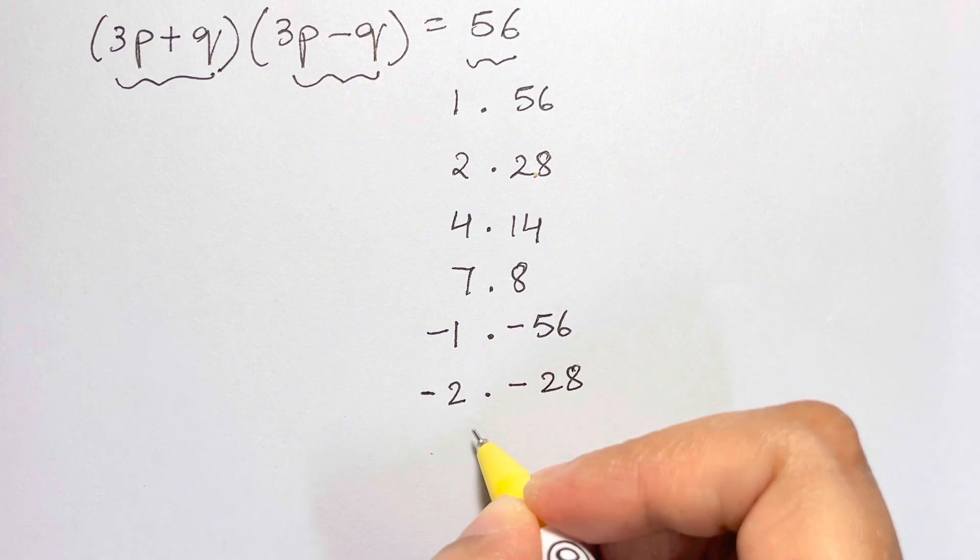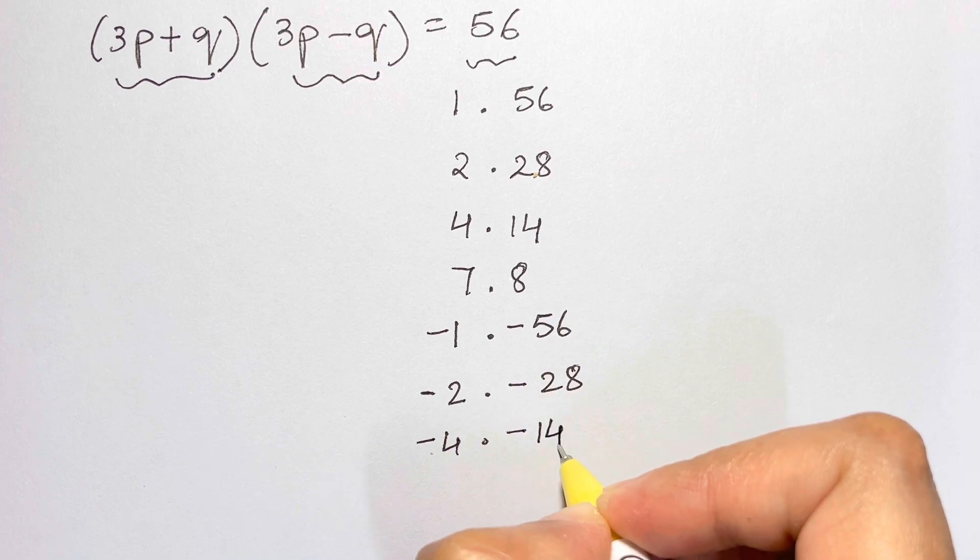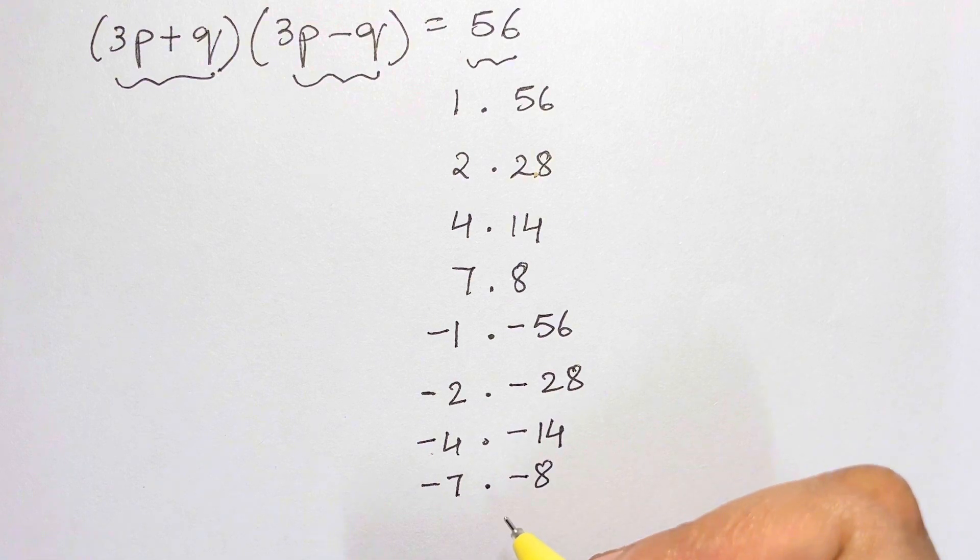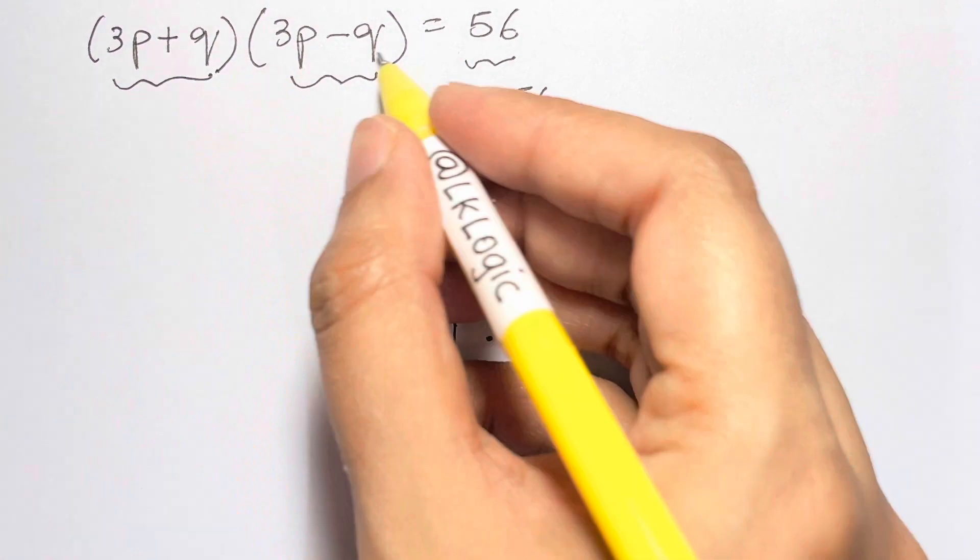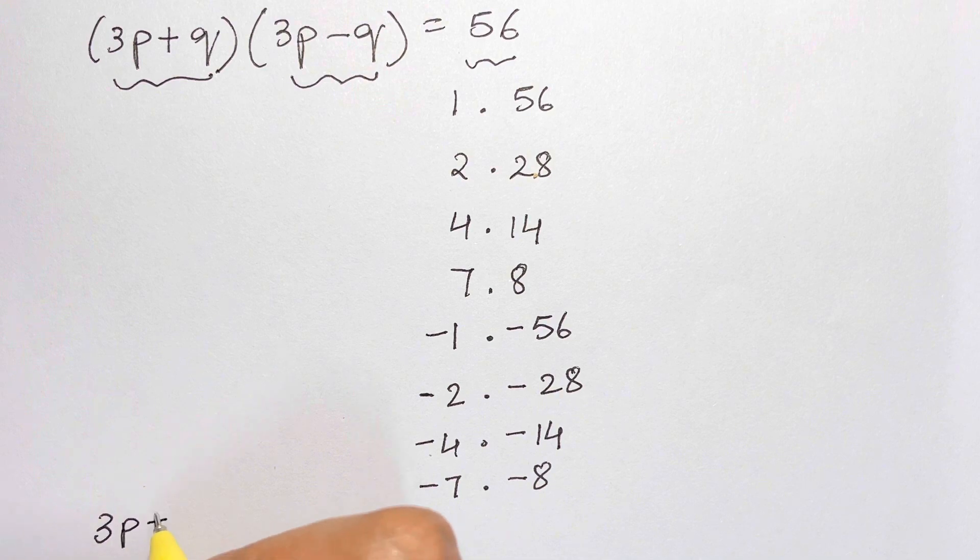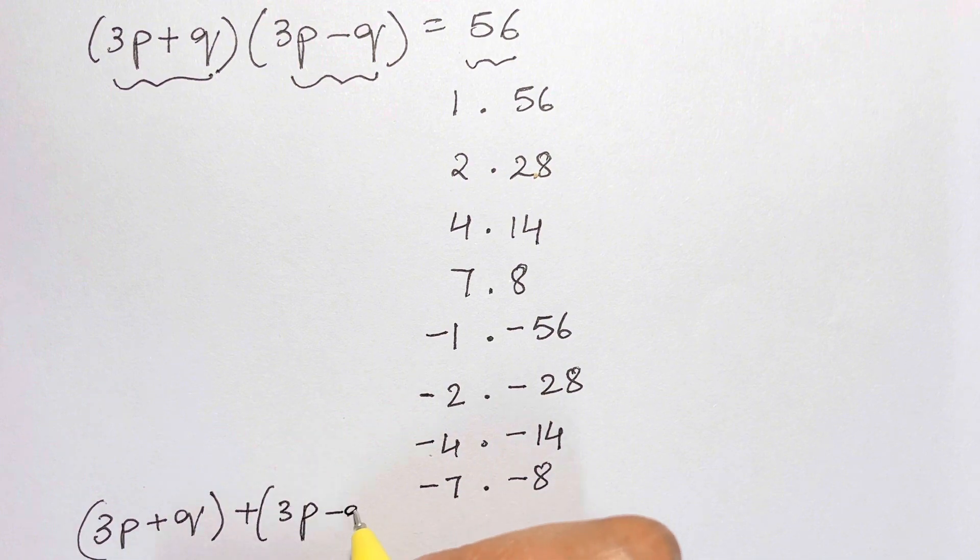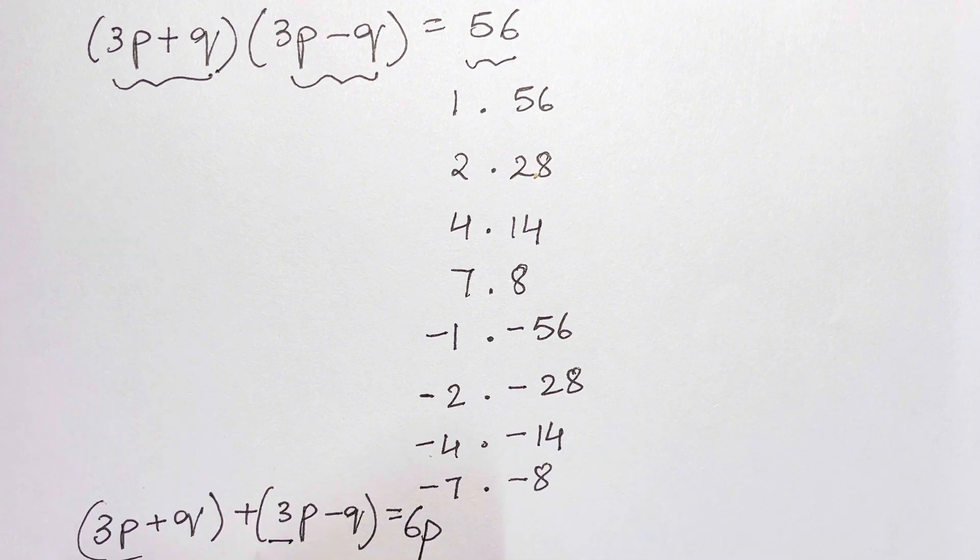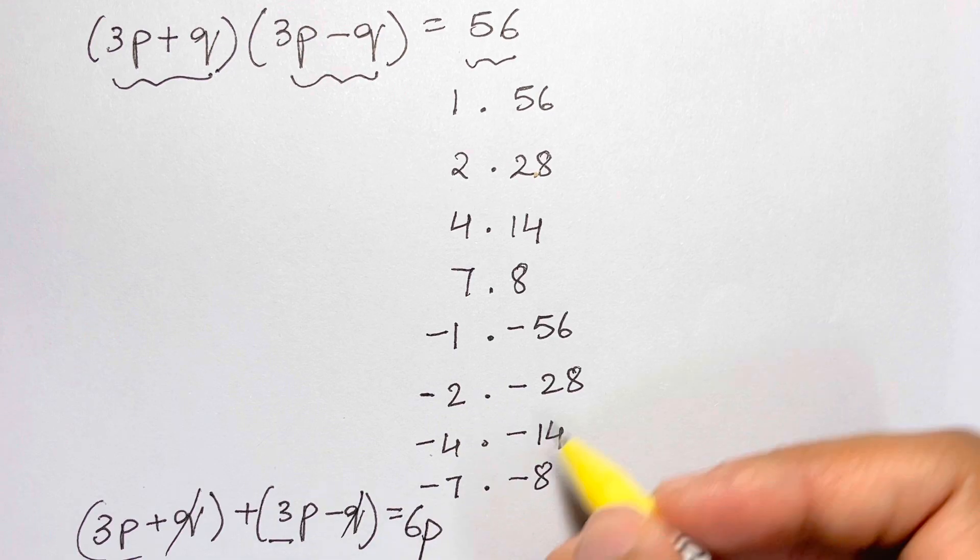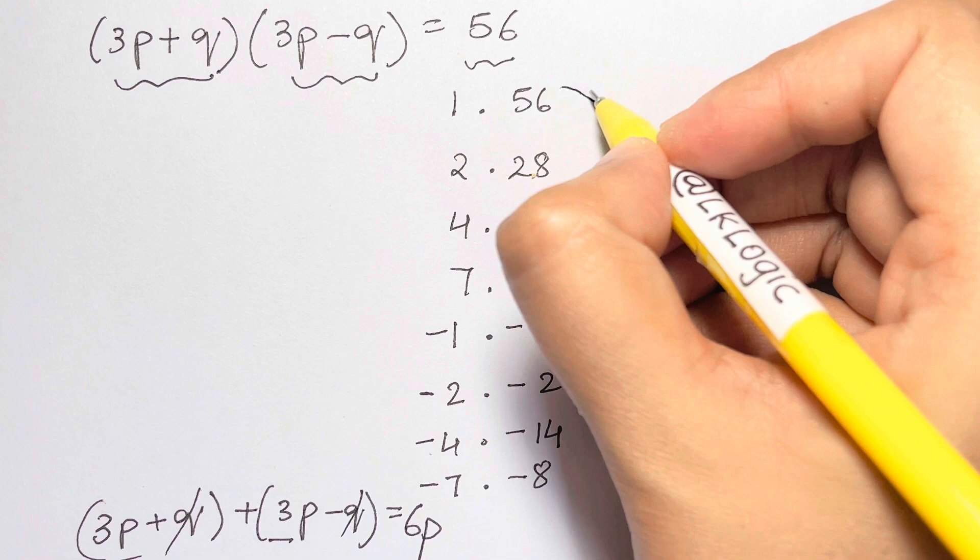Now let's take the sum, that is (3p + q) + (3p - q) = 6p. The q's cancel, so you get 6p. So it should be a multiple of 6. Let's check: 56 + 1 = 57, not a multiple of 6.